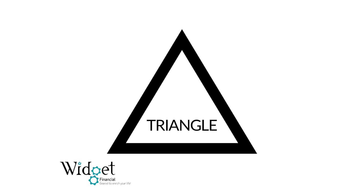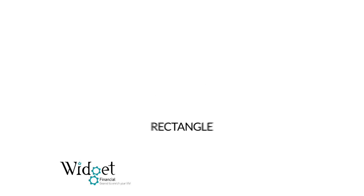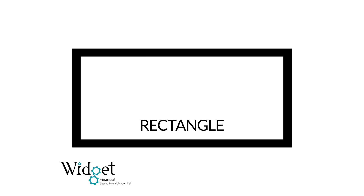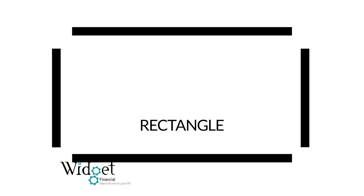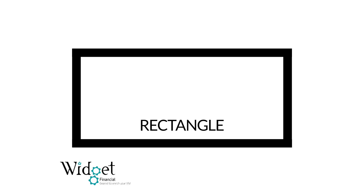This is a triangle. A triangle only has three sides. This is the shape of a rectangle. A rectangle has four sides. Two sides match each other and the other two sides match each other, but not all four sides match.